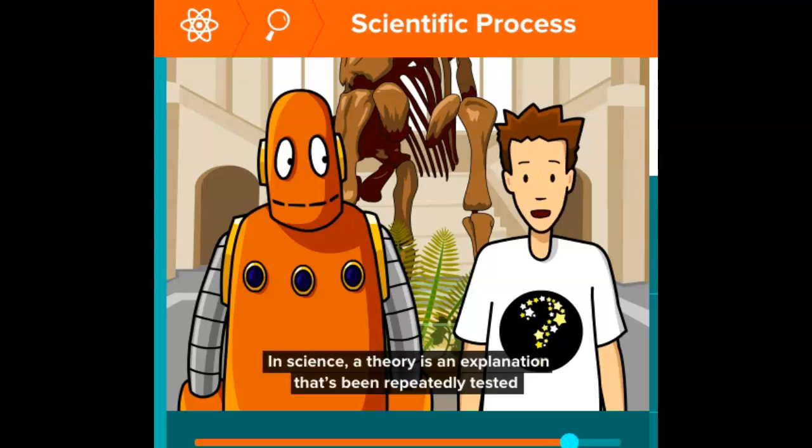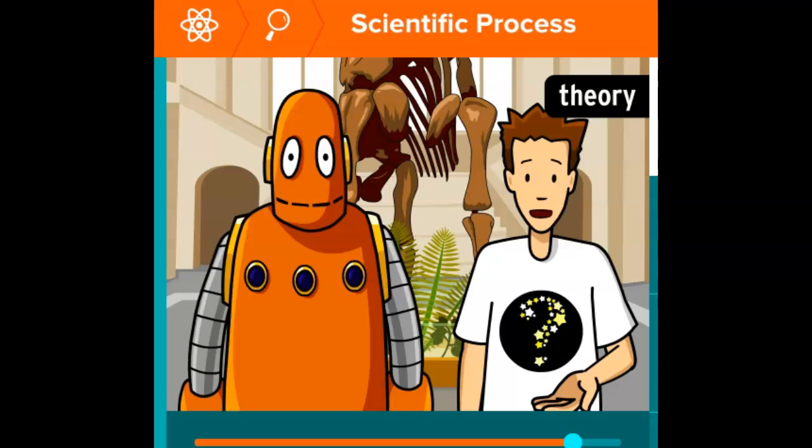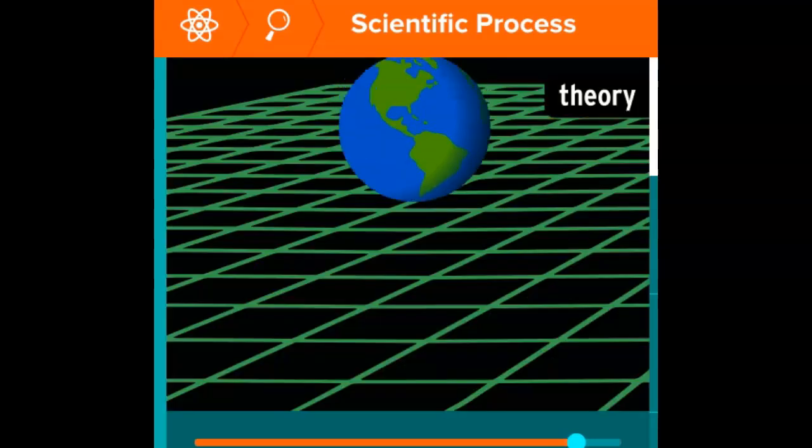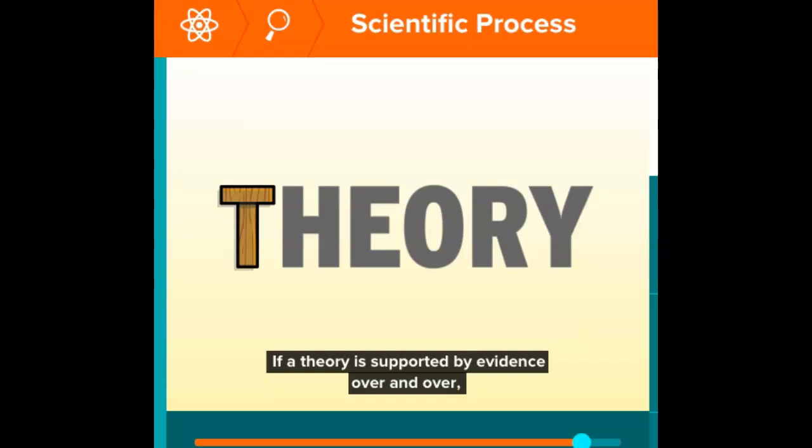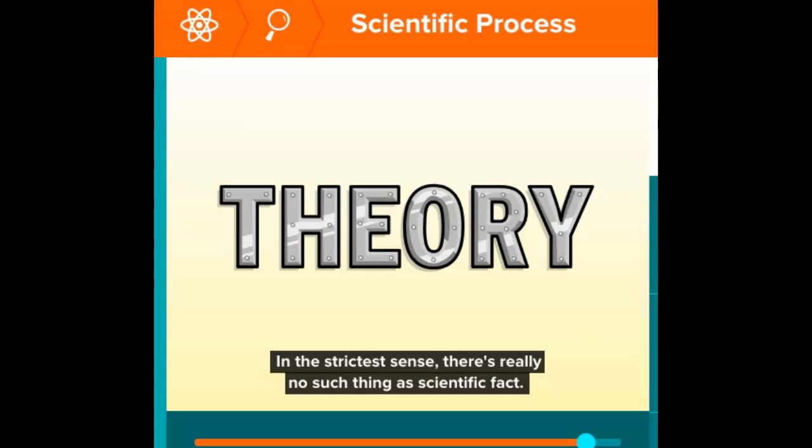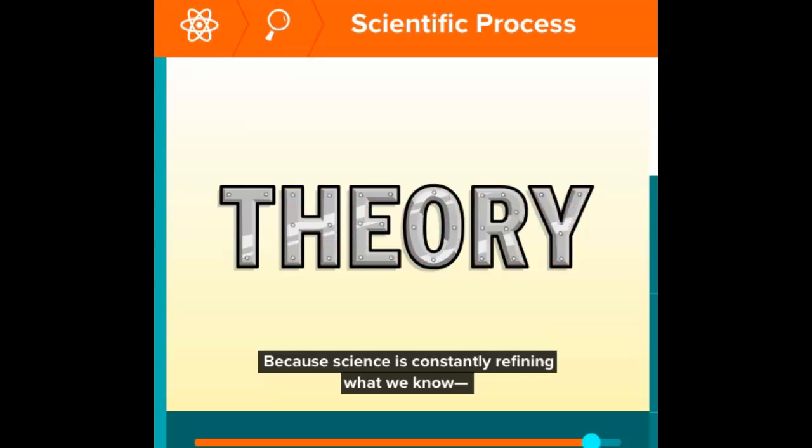In science, a theory is an explanation that's been repeatedly tested and confirmed through many lines of evidence, like the theory of gravity or the theory of evolution. If a theory is supported by evidence over and over, it becomes accepted scientific knowledge. In the strictest sense, there's really no such thing as scientific fact, because science is constantly refining what we know using the scientific process.